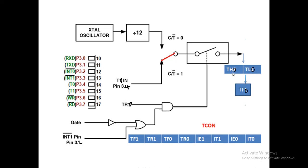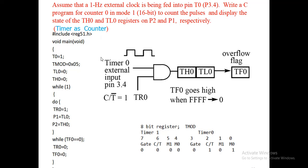Once it overflows, you reload TL0 equal to 0 and TH0 equal to 0. TCON uses TR0 and TF0 since we are using timer 0. Assume an external clock is connected on pin P3.4. Not only an external clock — you can also use sensors such as a proximity sensor.